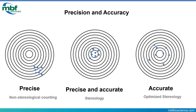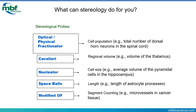Now that we've talked about some of the theory behind stereology, what can we do with Stereo Investigator and the stereological probes included in it? There are probes to look at cell populations using the optical fractionator or physical fractionator. You could run the Cavalieri estimator to get a regional volume such as the volume of the thalamus. You could run the nucleator probe to get an estimate of cell size, or the Spaceballs probe to get an estimate of length. There are many more, so let's launch the software to introduce the interface.